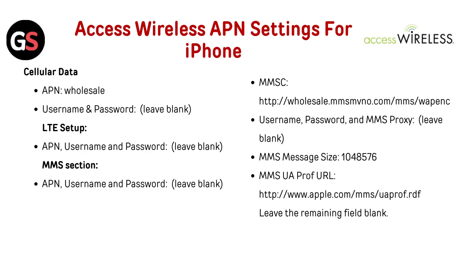Access Wireless APN settings for iPhone: Cellular Data APN — wholesale; username and password leave blank. LTE Setup APN — username and password leave blank. MMS section APN — username and password leave blank. MMSC — http://wholesale.mmsmvno.com/mms/wapenc. Username, password, and MMS Proxy leave blank. MMS message size — 1048576. MMS UA Profile URL — http://www.apple.com/mms/uaprof.rdf.